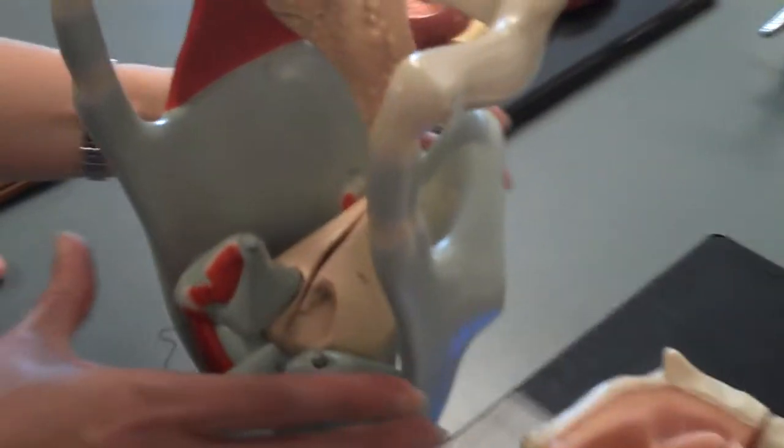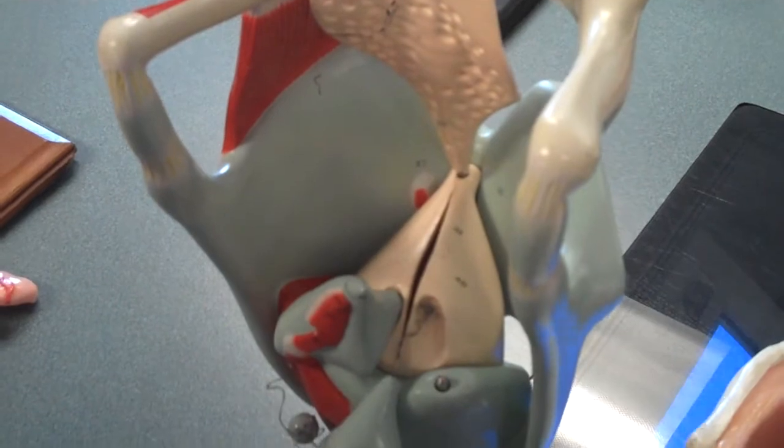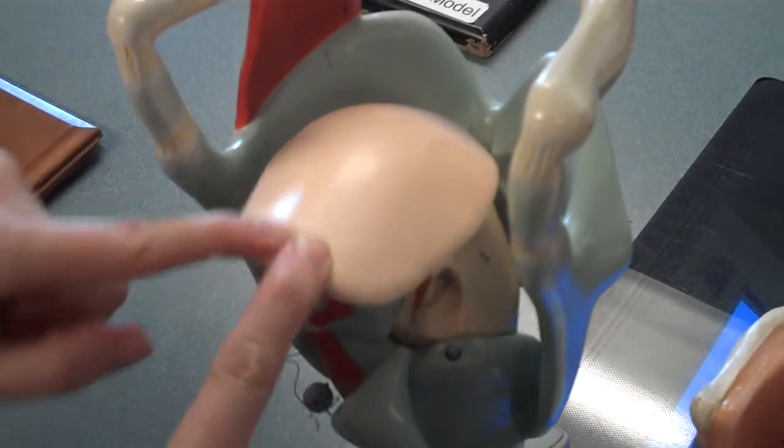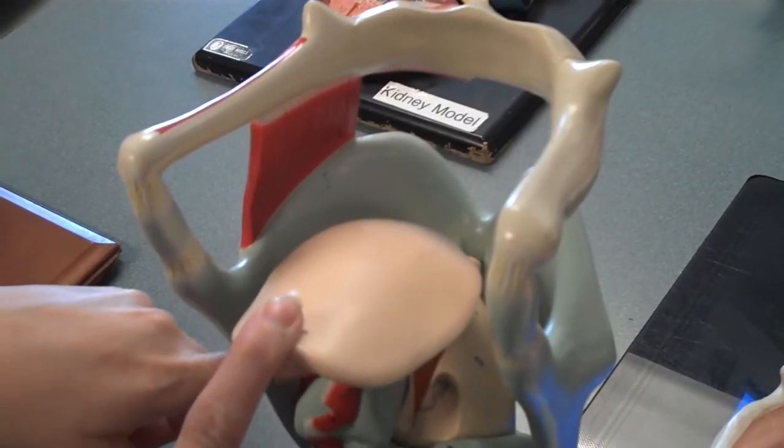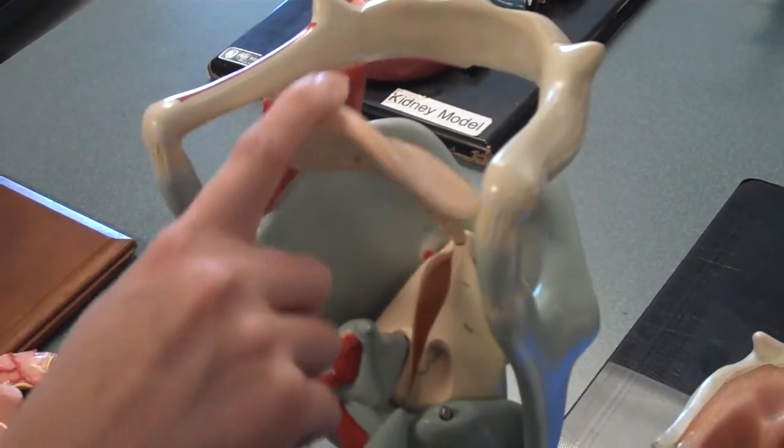As we swallow, the thyroid cartilage or the entire larynx moves upwards. The epiglottis hits against the base of the tongue and it gets pushed down. As the food is coming in as you're swallowing, the opening to the trachea, the glottis, is covered up and the food is forced down into the esophagus.